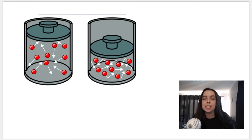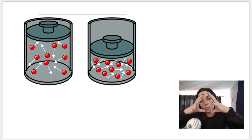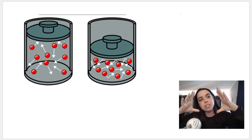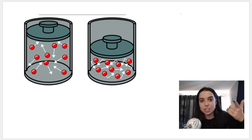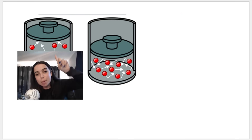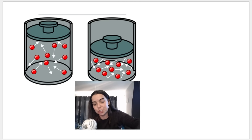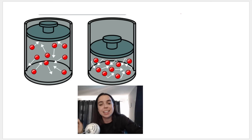Remember from previous videos: when we decrease the volume of a container — making it smaller and smaller while the number of moles and temperature stay the same — pressure increases. So essentially, by pressing a lid further and further down, we are increasing the pressure, which compresses the gas as seen in this image. We know that gases are compressible.